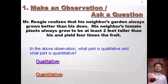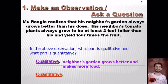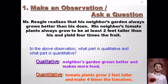Remember, if it's quantitative, it uses numbers. If it's qualitative, it doesn't use numbers — it uses descriptions. A qualitative observation could be that my neighbor's garden is better than mine and makes more food. Quantitative is when you pull the numbers in: the tomato plants are two feet taller and make four times the tomatoes. We're going to be doing a lot of this, so don't forget qualitative and quantitative.